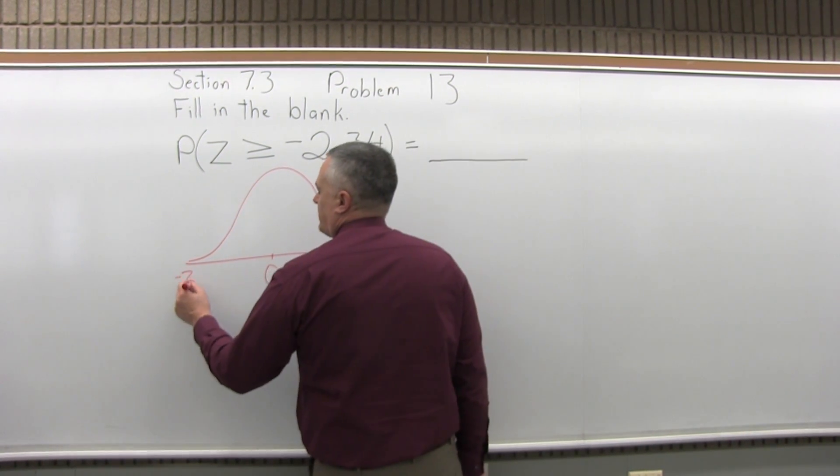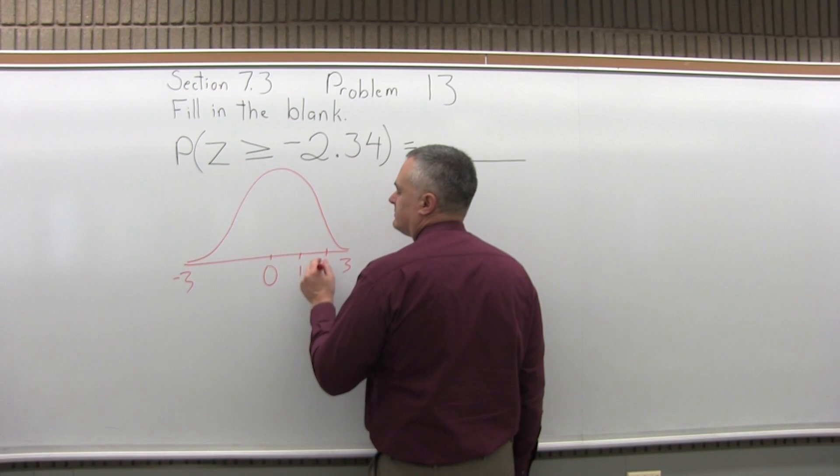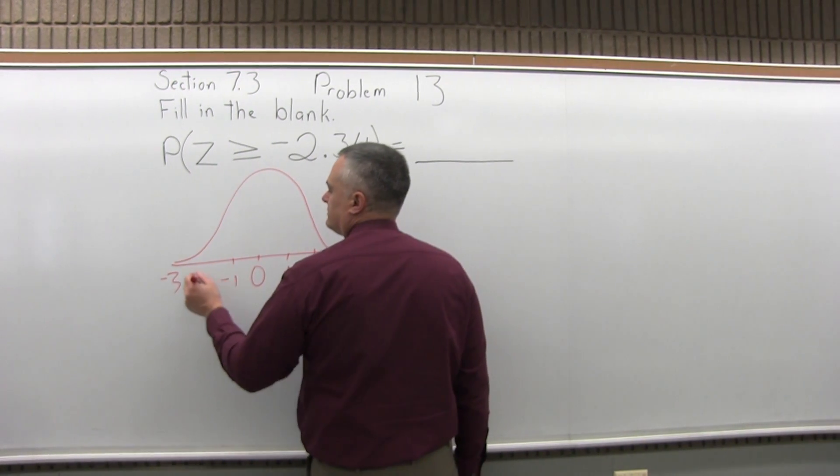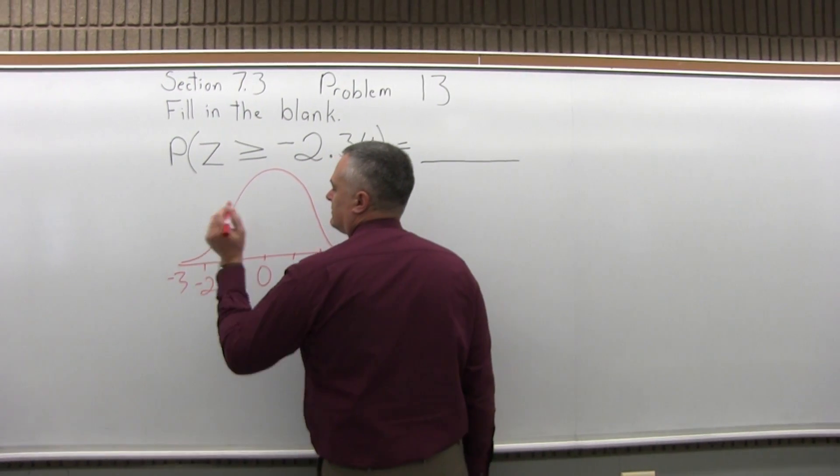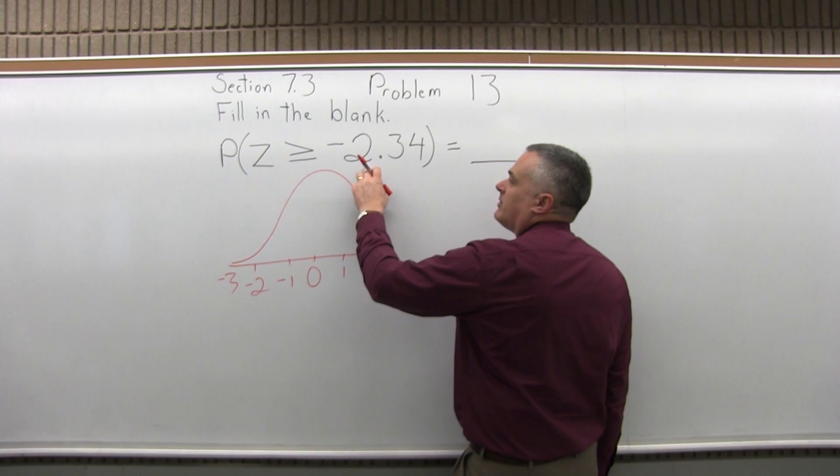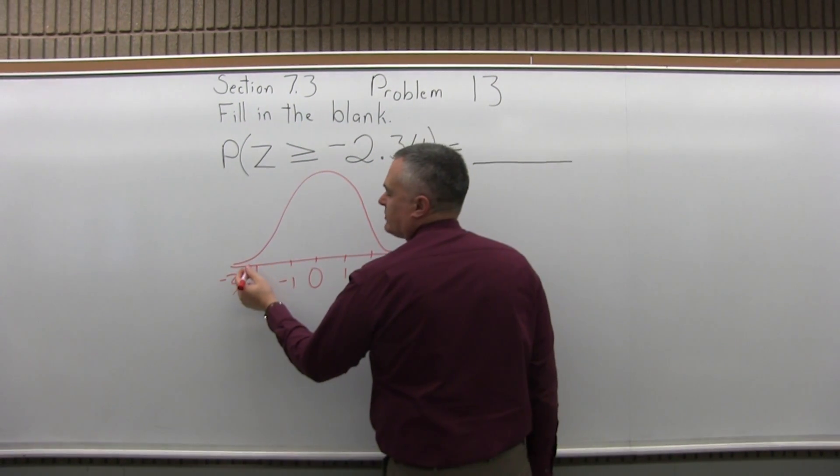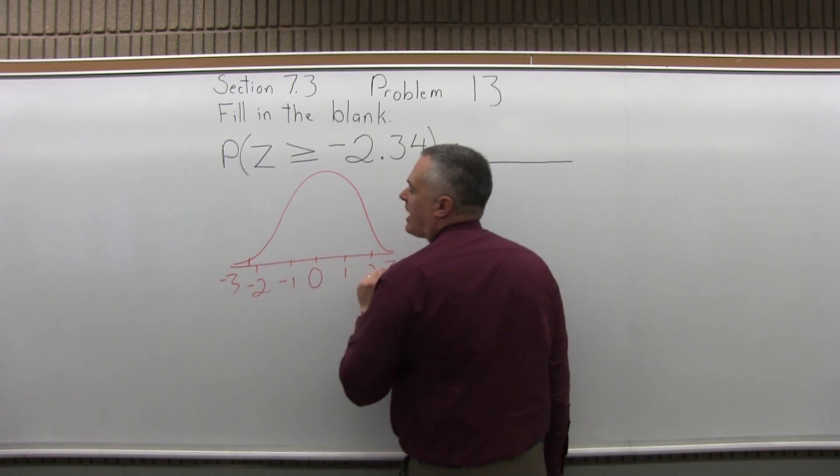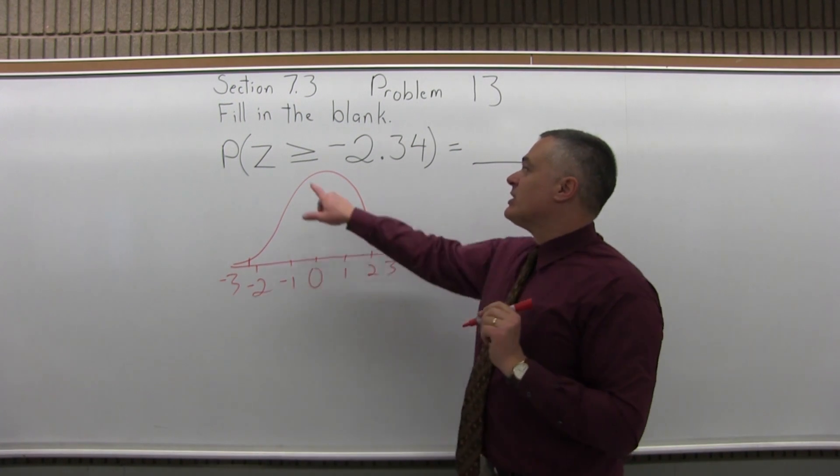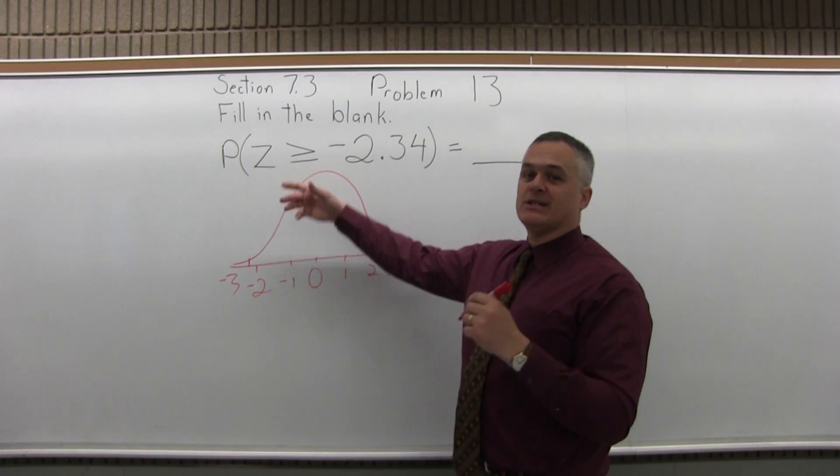So I'll draw a regular bell curve. And now we want the probability that Z is greater than negative 2.34. So this negative 2.3 something is pretty far out to the left, and we want the probability of being greater than that. So that's the stuff that comes afterwards or to the right.